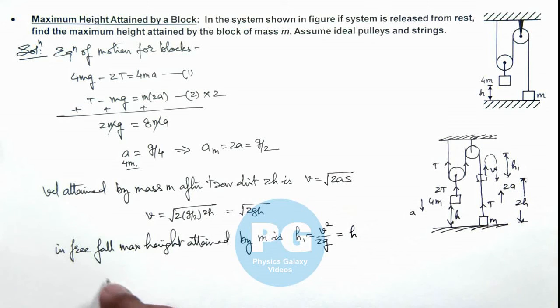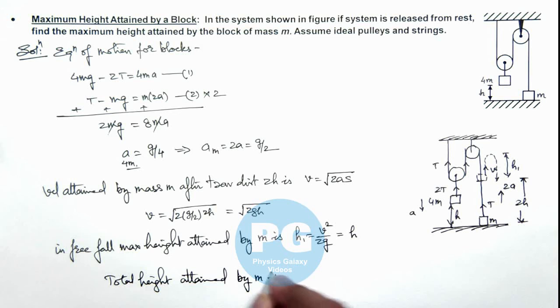So we can calculate the total height attained by m. This will be 2h plus h, which equals 3h above the ground. That will be the final result of this problem.